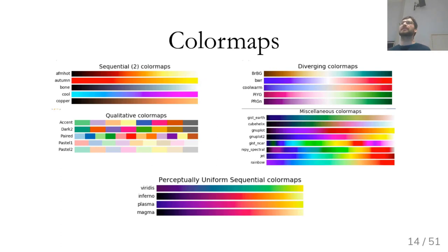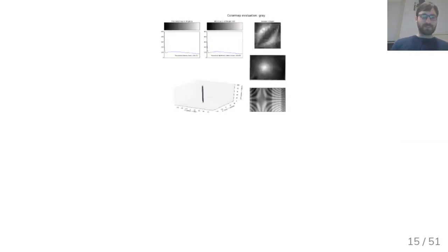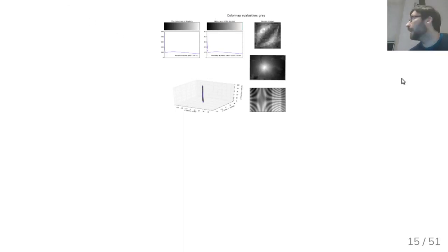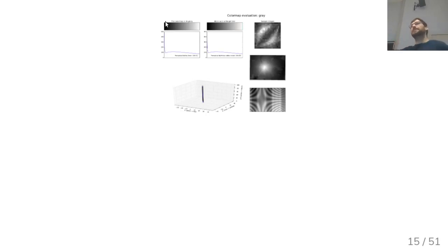Color maps are particularly important for heat maps. If you have a two-dimensional array and visualize each pixel as a number, that's basically a heat map. Here's a comparison: on the left is the JET color map that used to be used in Matplotlib and many other places, and on the right is the Viridis color map, which is the default since Matplotlib 2.0.